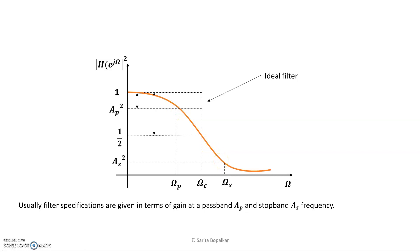In the previous video, we concluded that as the order of the Butterworth filter increases, the magnitude response becomes closer to the ideal frequency response we want to achieve. However, as the order of the filter increases, the cost of the product automatically increases due to increased hardware requirements. So we should find the minimum value of n, the order of the filter, which satisfies our frequency specification.